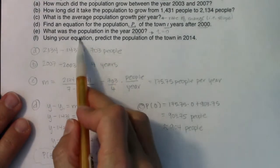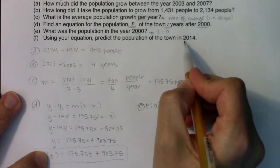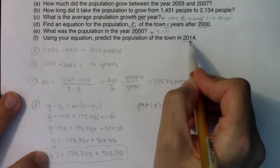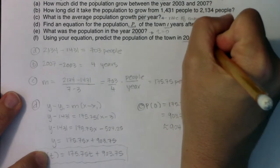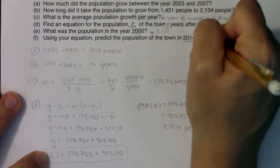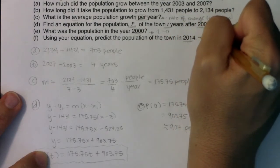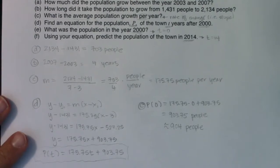The last part says use your equation to predict the population of the town in the year 2014. Well again, 2014 is a time value, but you want to be careful here. Don't plug 2014 in. In 2014, that was 14 years after 2000, so I actually want to plug in 14.